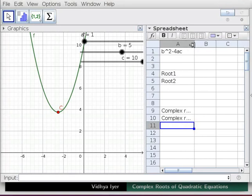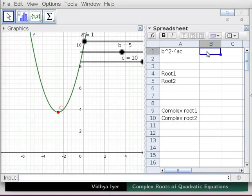In cells A9 and A10 type complex root 1 and complex root 2 and press enter. Drag column to adjust width. In cell B1 type B^2 - 4*A*C and press enter. The value minus 15 appears in cell B1 corresponding to b² - 4ac for fx.